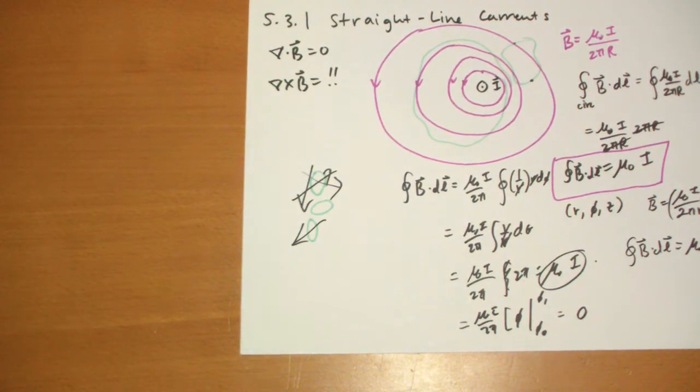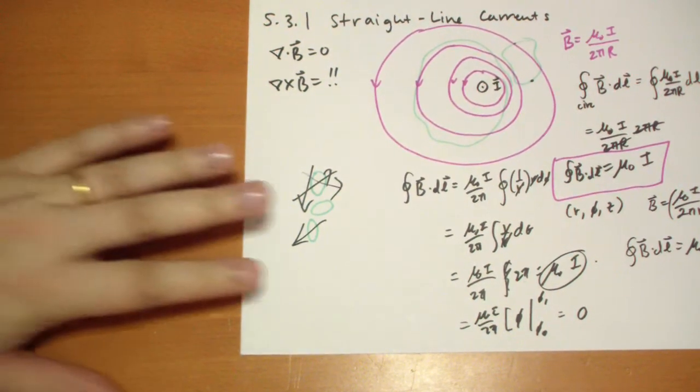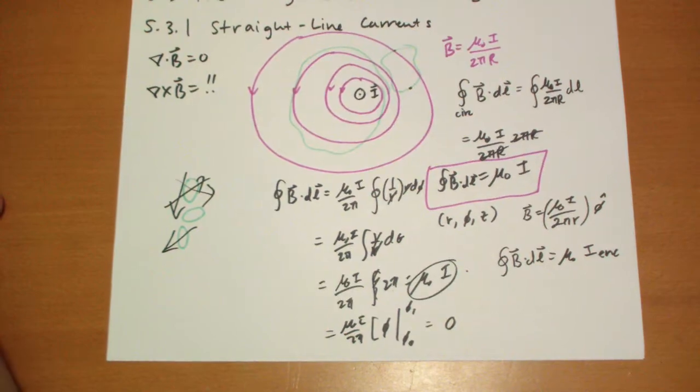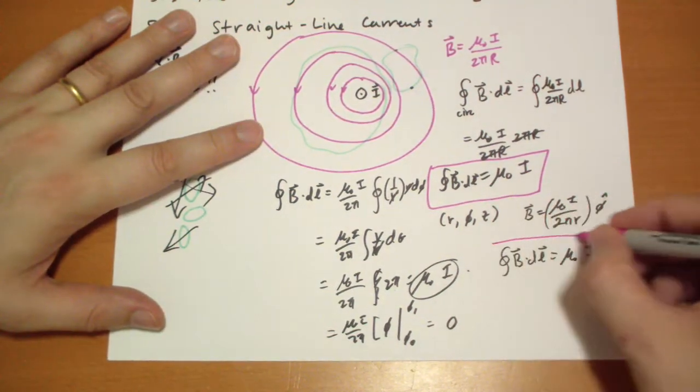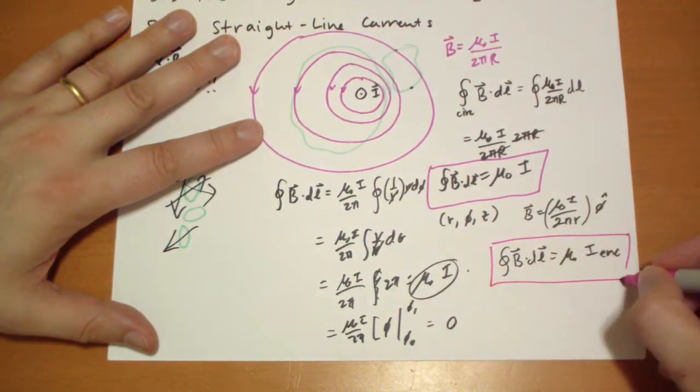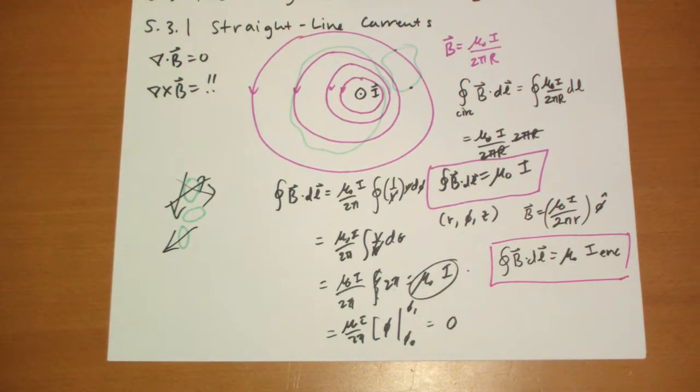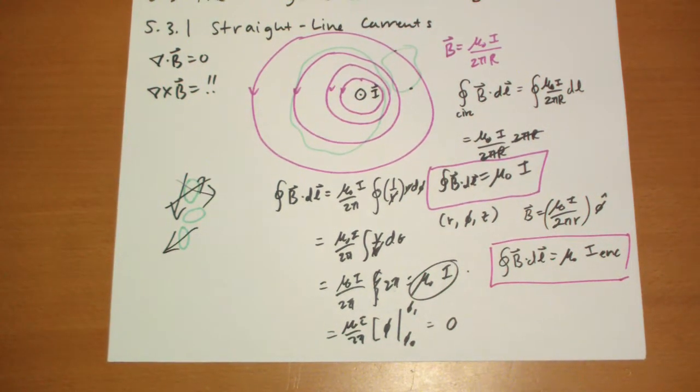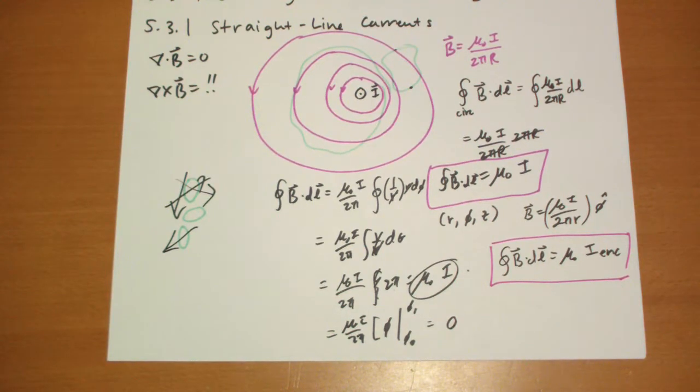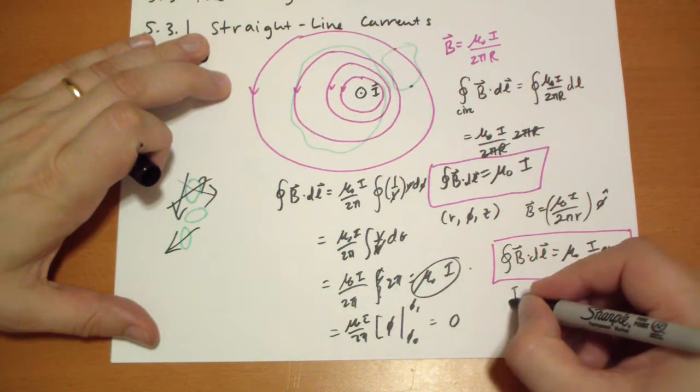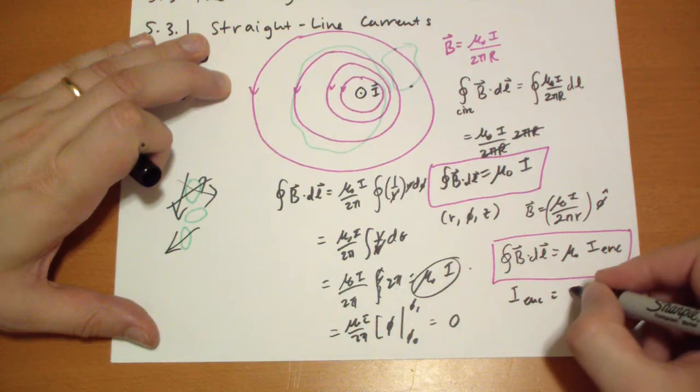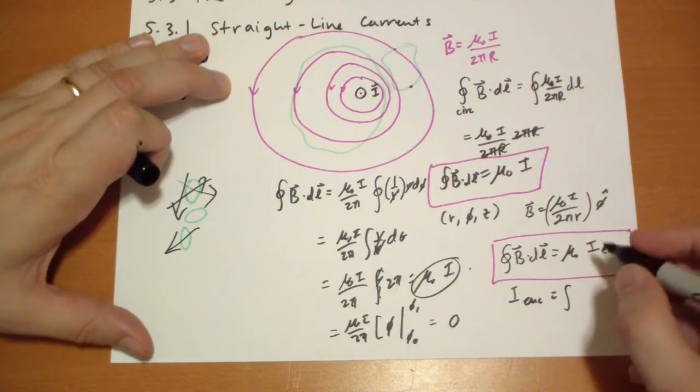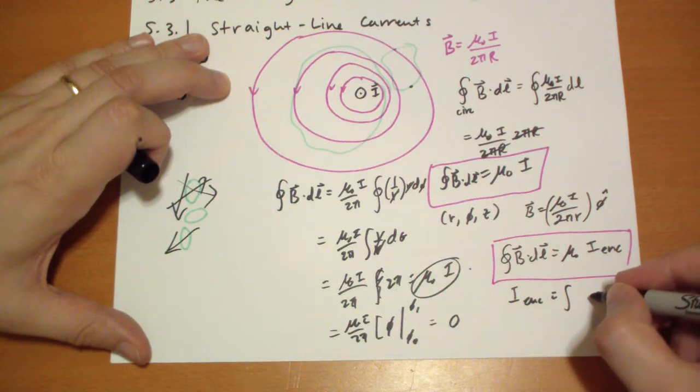Much like Gauss's law for electrostatics, here we have a law for currents that the current enclosed gives you that based on the path. Well, what's the current enclosed? That can be calculated as the integral over some volume, or over some area, of the volume current that passes through that area perpendicular to it.